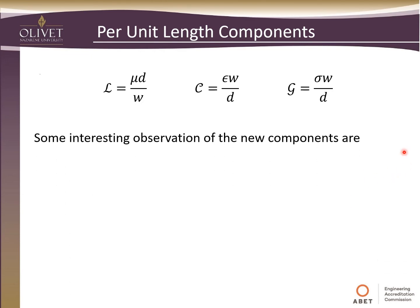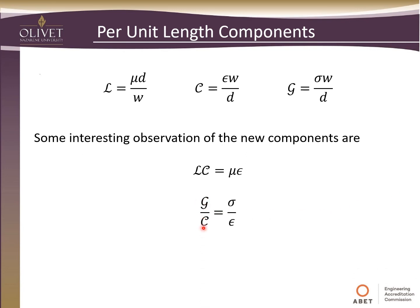Before we move on, we want to note some pretty interesting observations. If we take the inductance per unit length and multiply it by the capacitance per unit length, that gives us our permeability times our permittivity. So just as we've related voltage and current to electric and magnetic fields, we're also relating these per-unit quantities to the physical properties of our material. Likewise, if we take our conductance and divide it by our capacitance, this gives us our conductivity over our permittivity, which governs behavior in a dielectric.